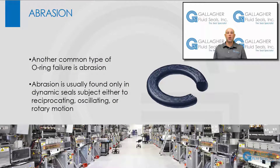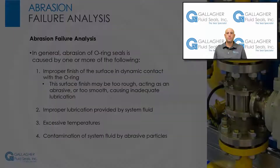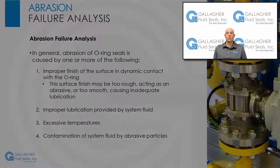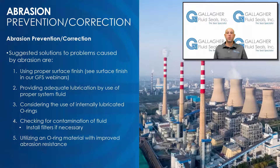Another rather common type of O-ring failure is abrasion. This is usually found only in dynamic seals subject to either reciprocating, oscillating, or rotary motion. In general, abrasion of O-ring seals is caused by one or more of the following: improper finish of the surface in dynamic contact with the O-ring — the surface finish may be too rough, acting as an abrasive, or the surface might be too smooth, causing inadequate lubrication due to the inability of the surface to hold a lubricant — improper lubrication provided by system fluid, excessive temperatures, or contamination of system fluid by abrasive particles.